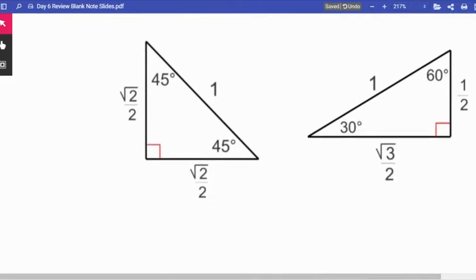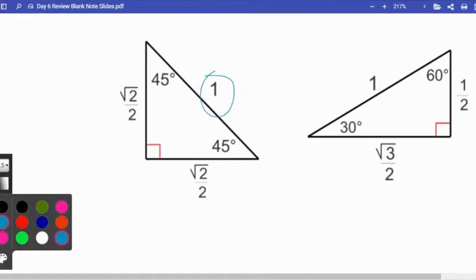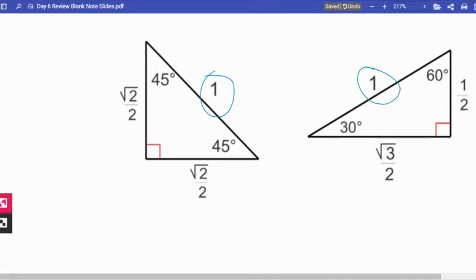We used these special right triangle shortcuts in eight four to get to labeling the unit circle. We did that by applying them to two versions of these triangles with hypotenuse lengths of one. If you put a one there, this is what the other sides become.